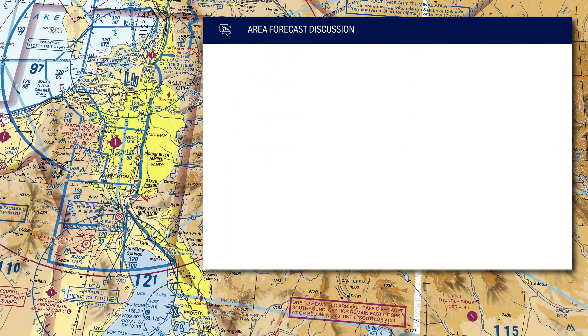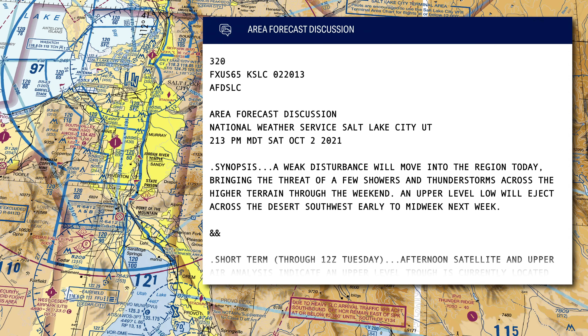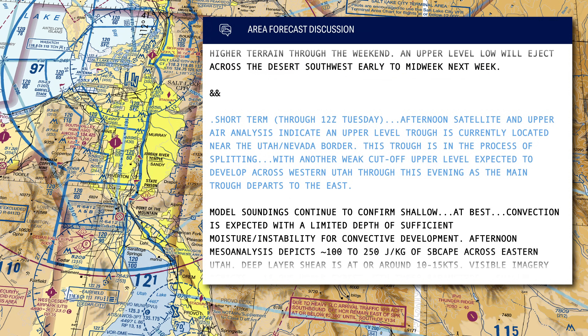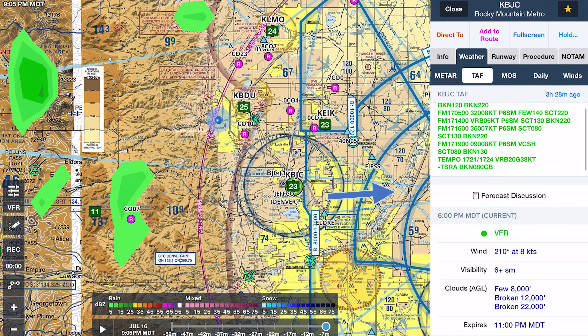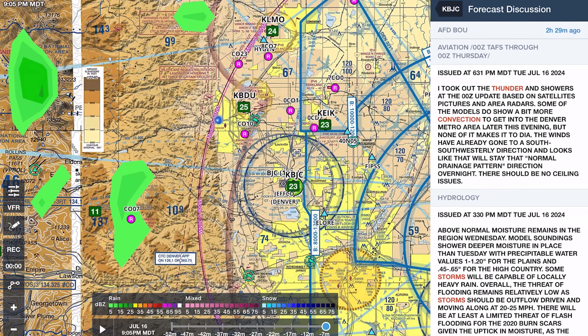Area forecast discussions are organized into different sections. Depending on the forecast office and the day, those sections can change a little bit, but typically you'll find key messages, a meteorological synopsis, a near-term or near and short-term discussion, a long-term discussion carrying you out several days, an aviation discussion focusing on TAF sites and other airports in between, and then possibly a hydrology section on flooding, a fire section, and a marine section. You can find these in pretty much every electronic flight bag — in ForeFlight, it's under the forecast discussion link by the TAF; in Garmin Pilot, it's under the discussion tab.